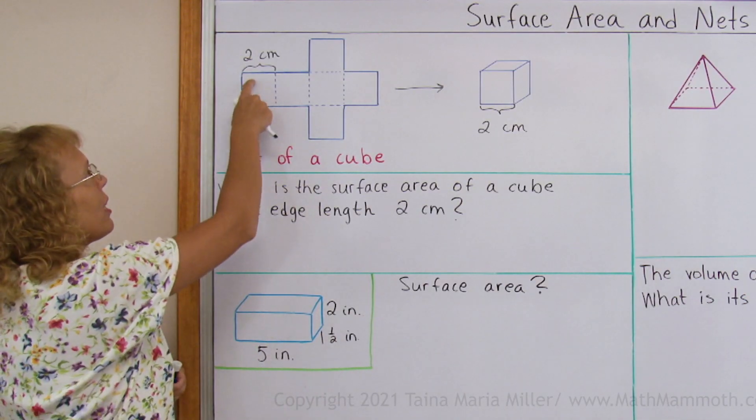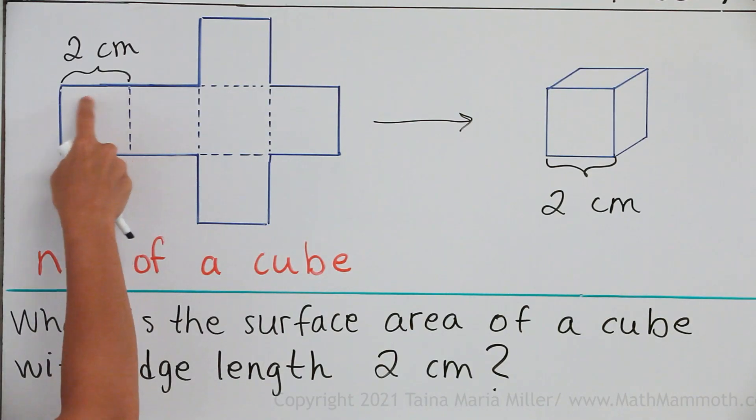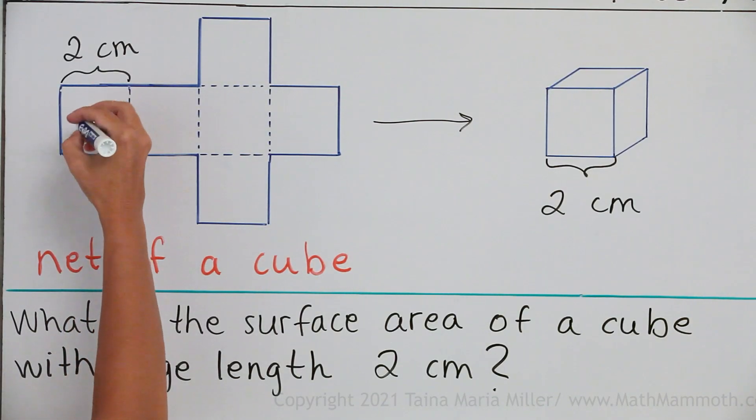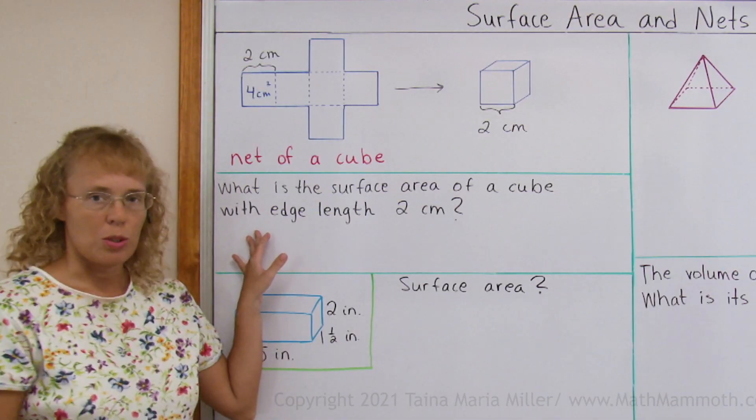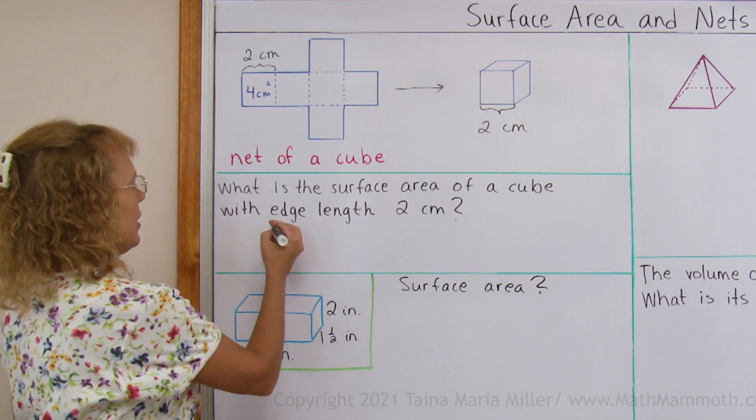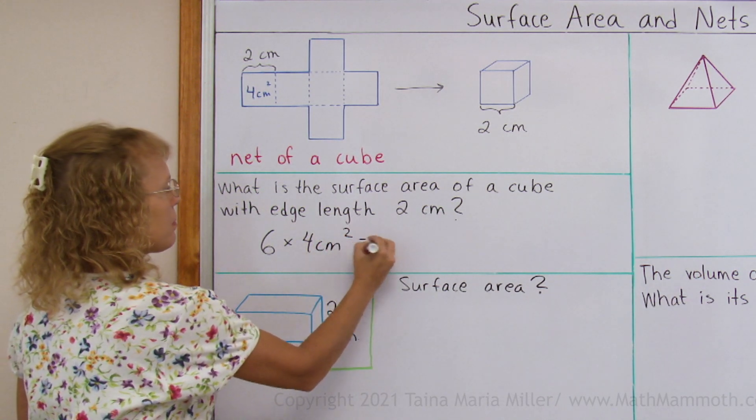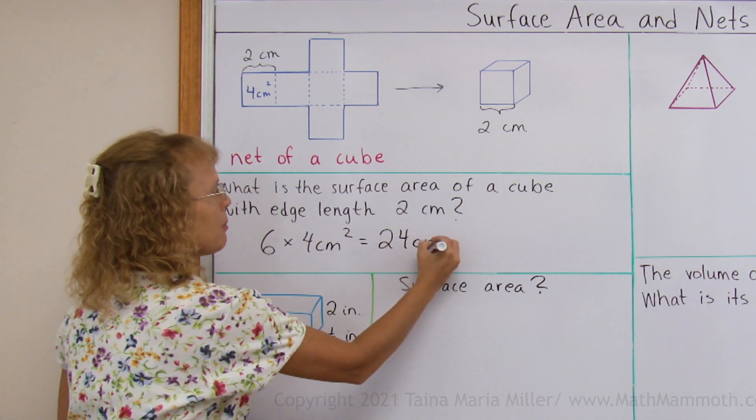And each square has the area of what? 2 times 2, or 4 square centimeters. So the surface area in total is 6 times 4 square centimeters, which equals 24 square centimeters.